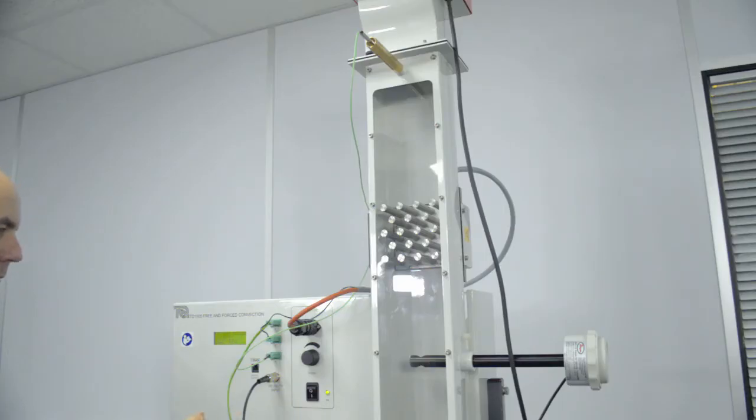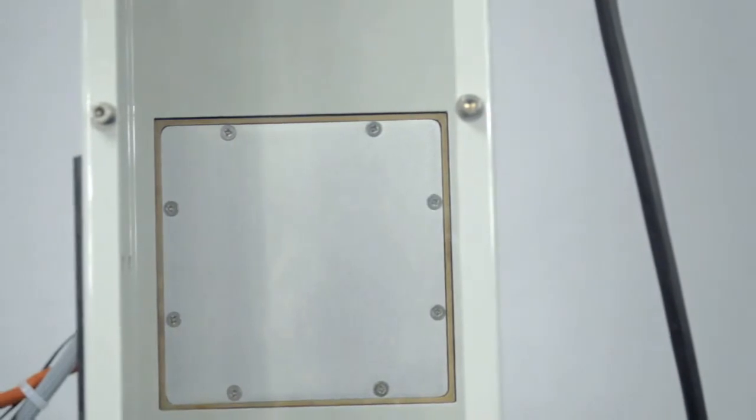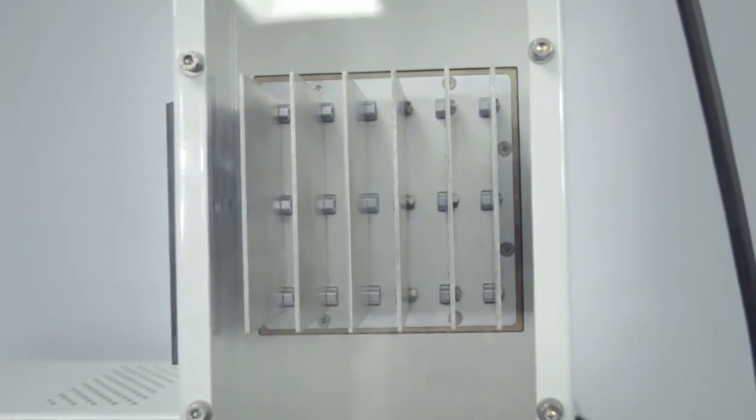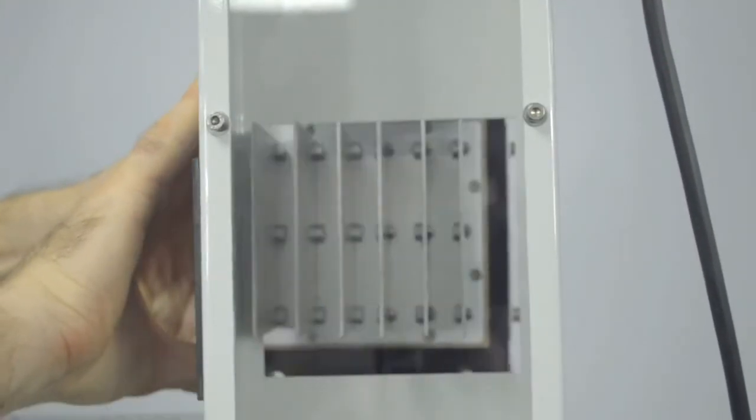TechQuipment's TD1005 Free and Forced Convection is a bench-mounting apparatus including a vertical duct that holds three different common heat transfer surfaces: a flat plate, a pinned surface, and a finned surface. Students can fit these to the vertical duct using simple fixings.